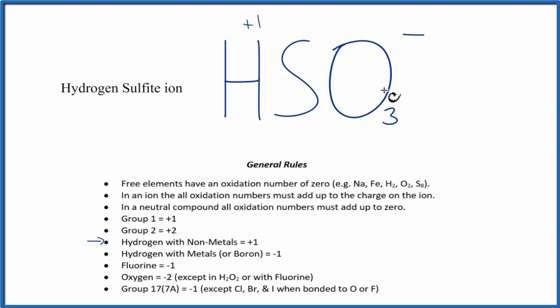And then oxygen is always minus two, with a few exceptions. So each of these, we have three oxygens, each one's going to be minus two. What we don't see on our list here is the sulfur, so we don't know what that is.